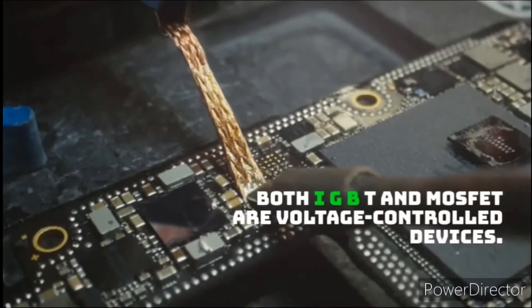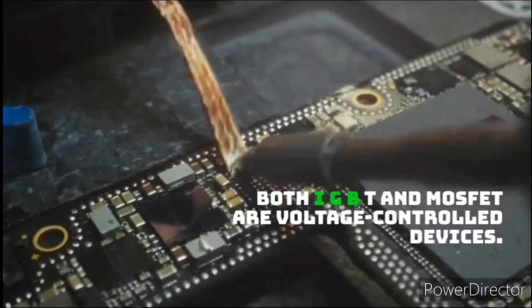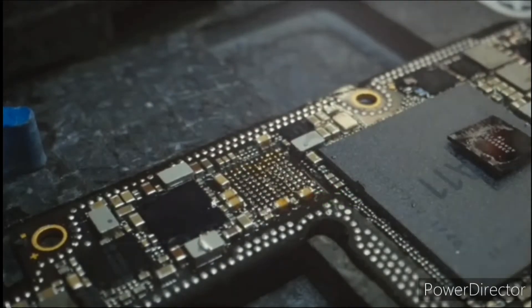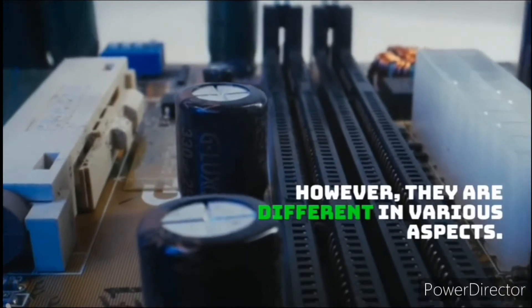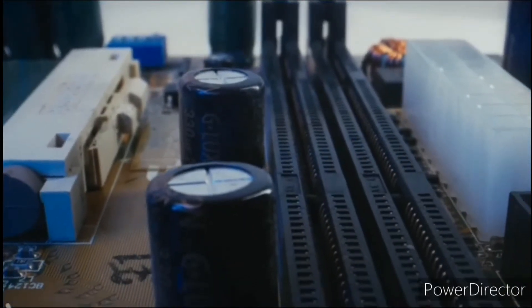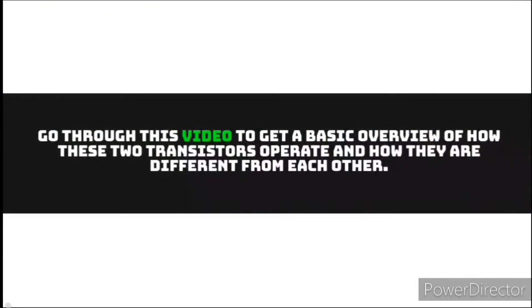Both IGBT and MOSFET are voltage control devices. However, they are different in various aspects. Go through this video to get a basic overview of how these two transistors operate and how they are different from each other.